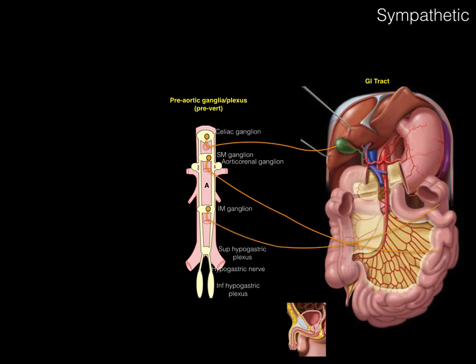The same postganglionic pathway decreases peristalsis in the small intestine and changes blood vessel diameter. From the inferior mesenteric ganglion, fibers go to the colon, and from the inferior hypogastric plexus to the penis to cause ejaculation. As a pattern: the more proximal the GI tract — like the distal esophagus, stomach, duodenum, and foregut elements like the liver and pancreas — the higher up in the pre-aortic ganglion the innervation comes from. The more distal the GI tract, or if in the pelvis and perineum, the more inferior the origin in the pre-aortic plexus.